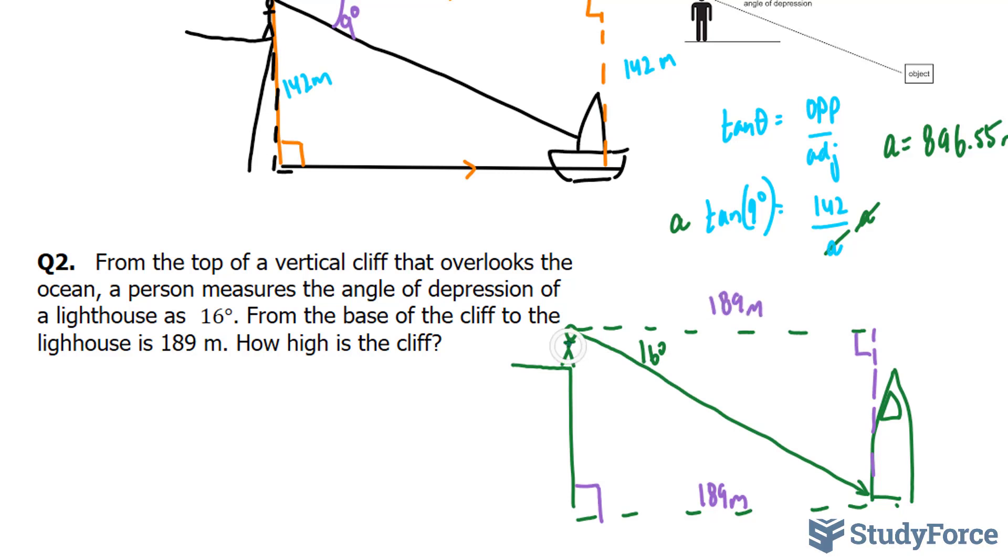What we have to find is the height of this cliff. To do this, we can simply find this. This time, if we take 16 as a reference angle, the opposite is the height of the cliff and the adjacent is the distance from the base of the cliff to the base of the lighthouse. So we are going to use tangent again. Tangent of 16 degrees is equal to the opposite, which is what we are looking for. I am going to denote it as x. You can denote it as any letter. And the adjacent is 189.